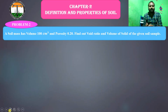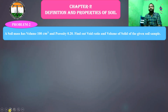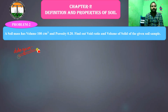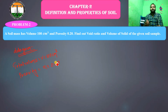Come to the next question. A soil mass has total volume of 100 cubic centimeters and porosity 0.20. We have to calculate the void ratio and volume of solid of the given soil sample. Here, instead of volume of voids, the total volume is given. Data given: total volume V equals 100 cubic centimeters, porosity eta equals 0.20.